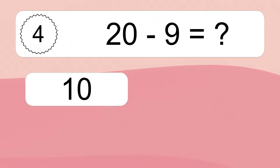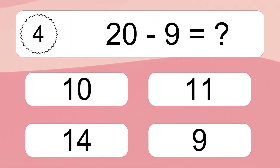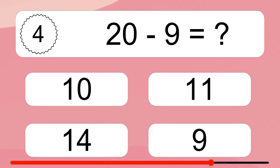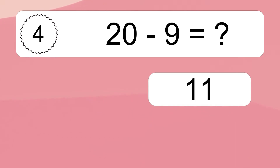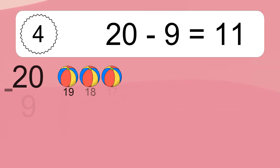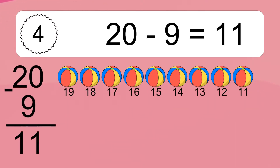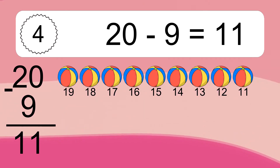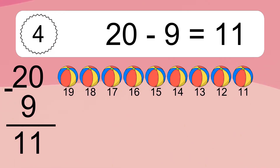20 minus 9 equals what? 20 minus 9 equals 11. Let's count it: 19, 18, 17, 16, 15, 14, 13, 12, 11.